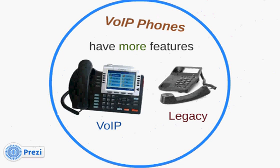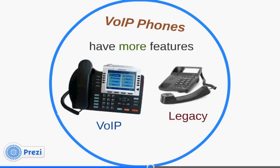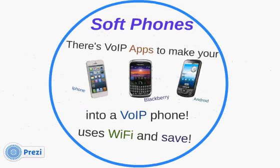VoIP phones have way more features. Here's an example of a VoIP phone on the left and a legacy phone on the right. All of the buttons — on the side, on the bottom, on the end — they're all programmable. You can program them any which way you like for different features and functions. It's a software device, so you can program this phone to check the weather by zip code, check area codes, and more. VoIP phones are very extensible.